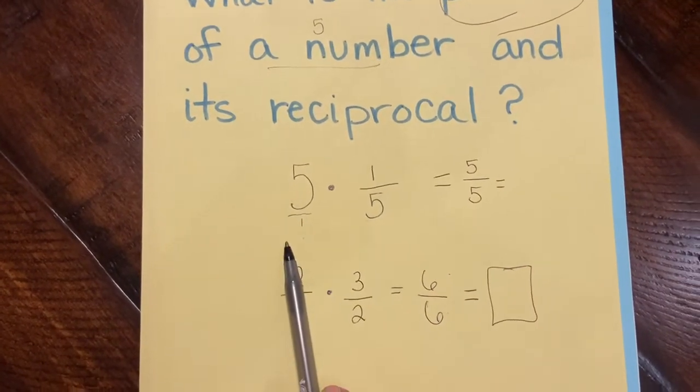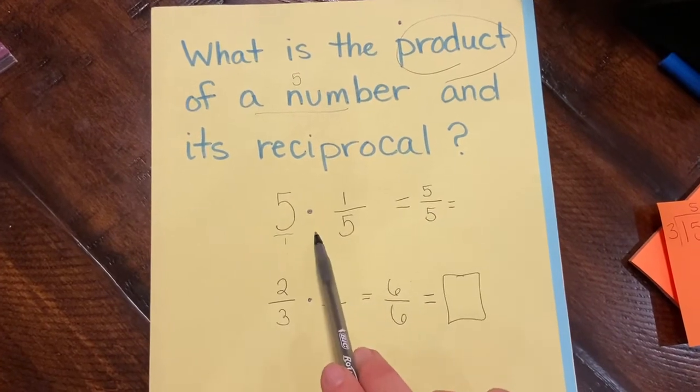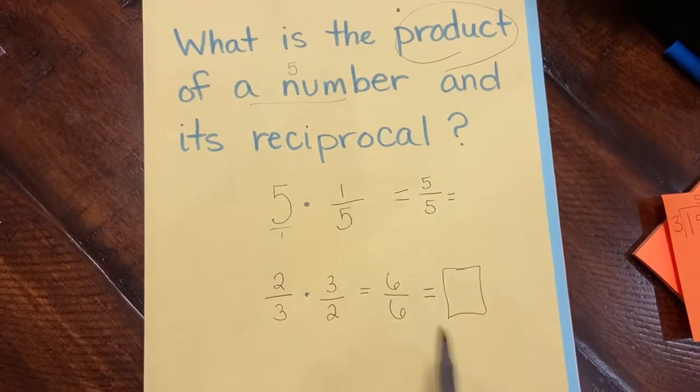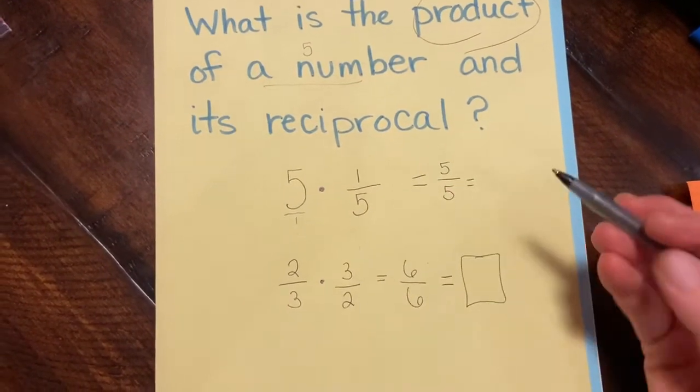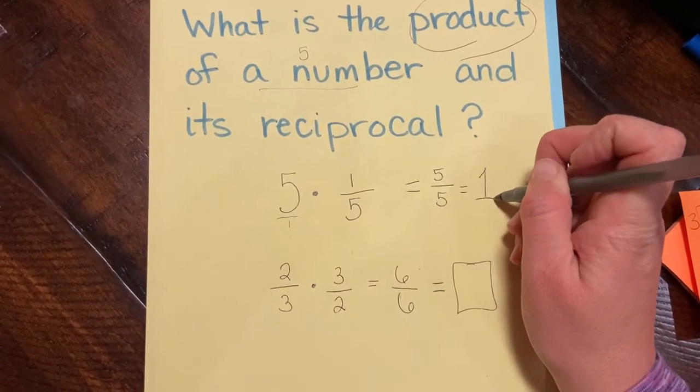So no matter what number I choose, when I find the product, so I multiply it by its reciprocal, the flip-flop, the inverse, the answer that I will get is one.